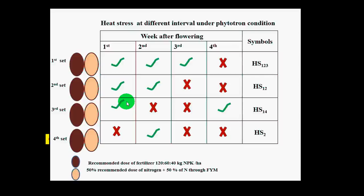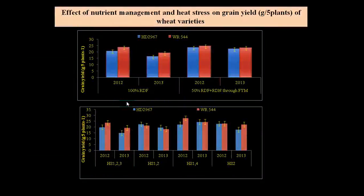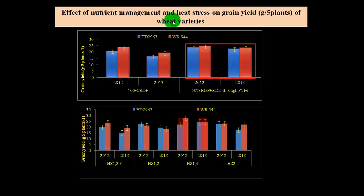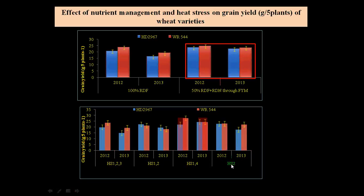The purpose was to check the fluctuation and intensity of heat stress on cultivar behavior. When FIM was applied as a seed priming approach, the yield of both cultivars was very good. It was found that when heat stress was given at the first and fourth week after flowering there was maximum yield, while minimum yield was recorded when heat stress was given at the second and third week after flowering. Even a single application of heat stress at the second week after flowering was critical.